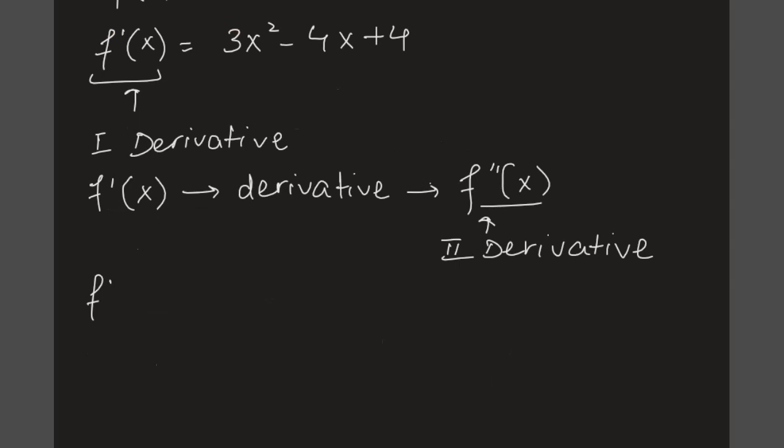In order to find out the second derivative, all we have to do is find out the derivative of the first derivative, and the first derivative is 3x² - 4x + 4. So we are just finding the derivative of this. We apply the derivative rules and we get 6x - 4. So this is our second derivative.